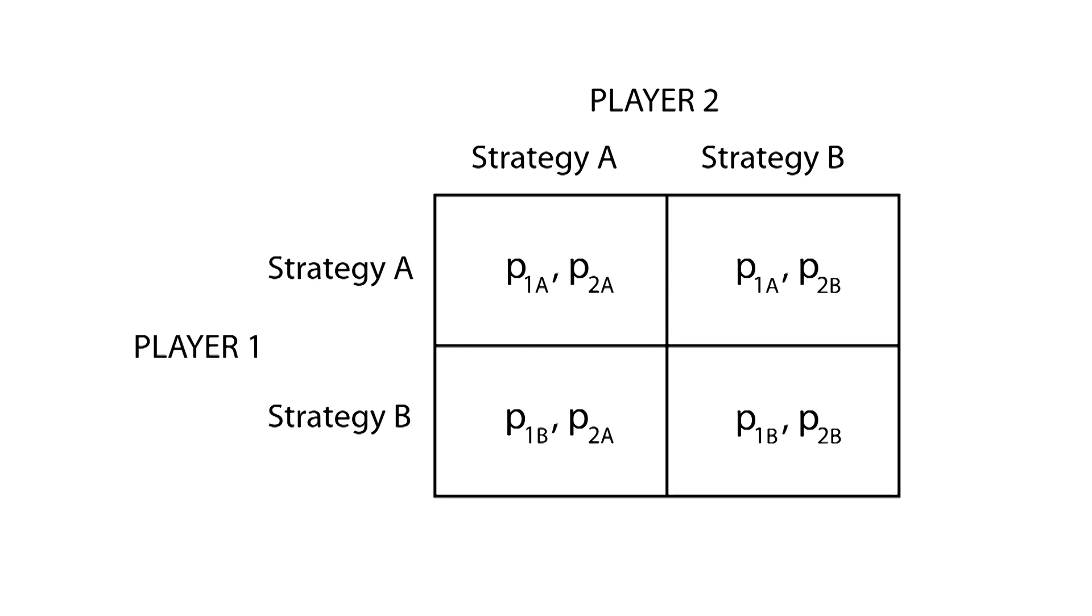Let's use another example. Player 1 chooses strategy A, and player 2 chooses strategy B. Our payoffs are those in the cell in the first row and second column, P1A, which is the payoff for player 1, who chooses strategy A, and P2B, which is the payoff for player 2, who chooses strategy B.